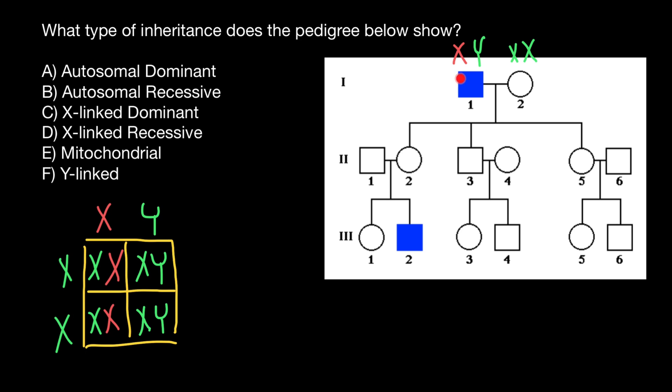As you can see, all sons of this couple are going to be phenotypically and genotypically normal, but all daughters are going to be obligate heterozygous — or obligate carriers. So the daughters' genotype has to be one defective X chromosome and one normal X chromosome.